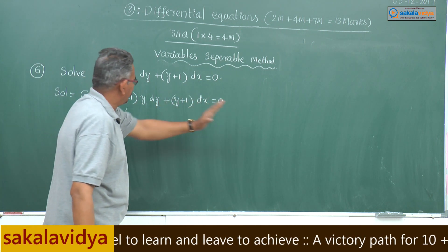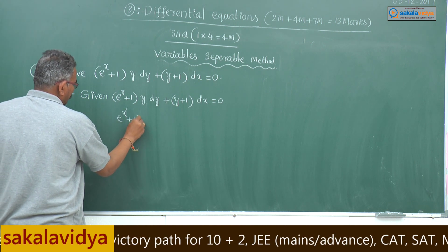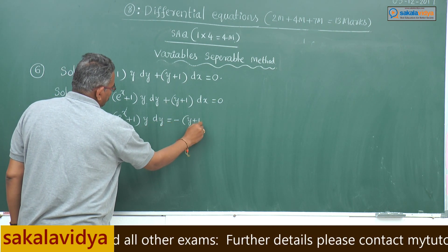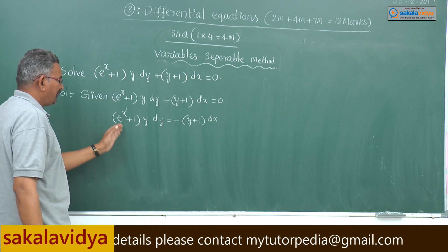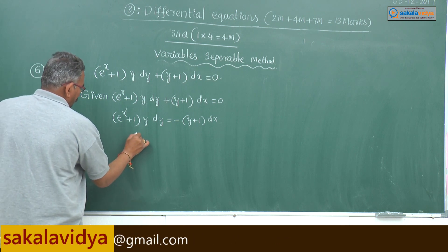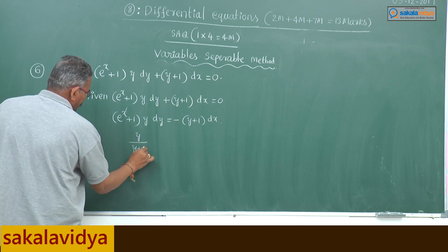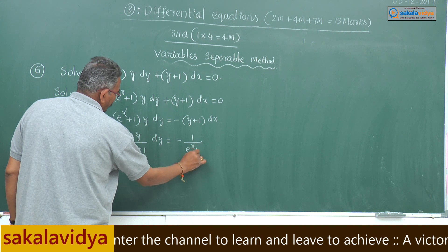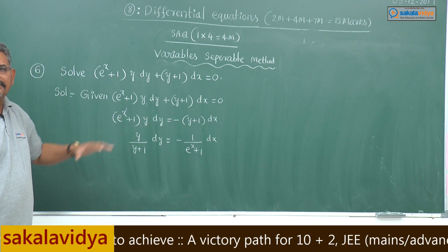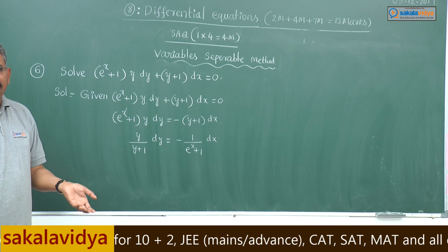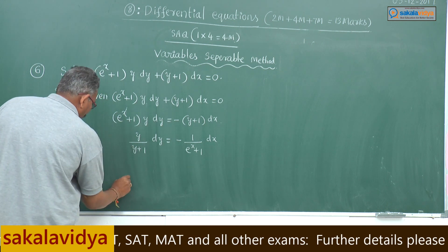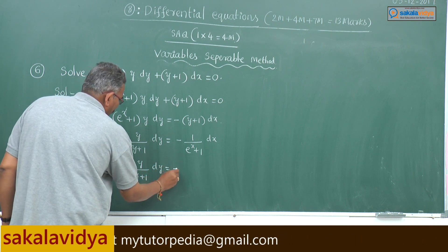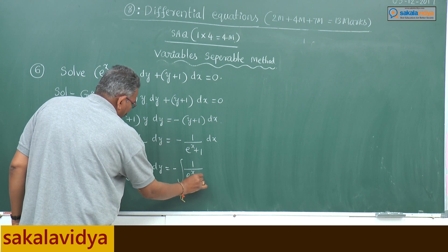Take the (y plus 1) dx term to the other side. So, (e^x plus 1) into y dy equals minus (y plus 1) dx. Bring e^x plus 1 to one side and y plus 1 to the other side: that means y by (y plus 1) dy equals minus 1 by (e^x plus 1) dx.